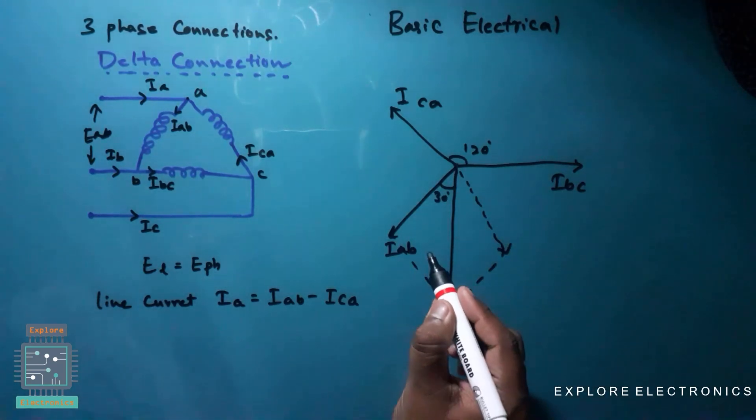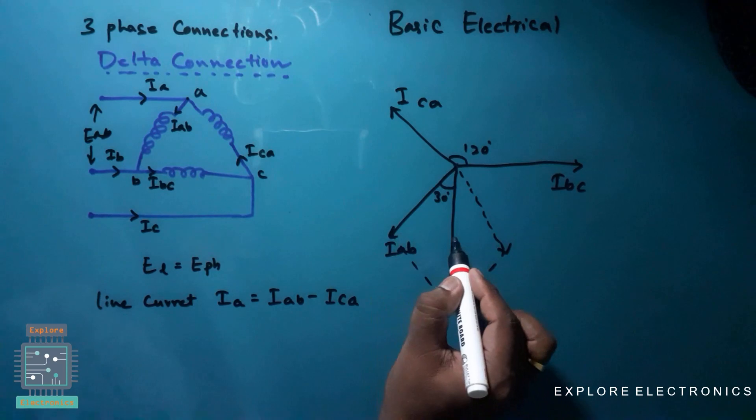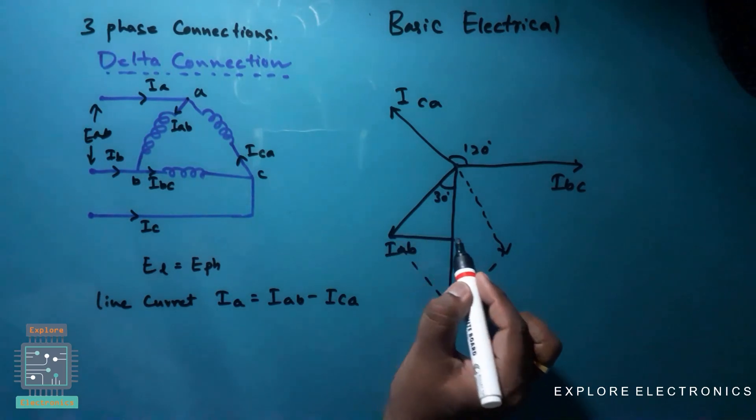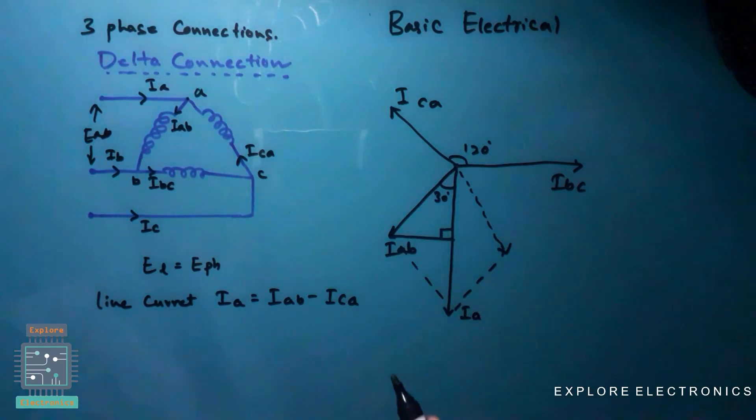Now I need to again draw the perpendicular from this point to join here. Now this is the right angle triangle.